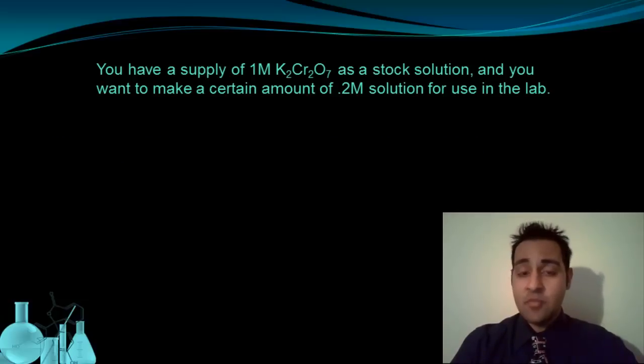Let's say you have a supply of 1M K2Cr2O7 as a stock solution, and you want to make a certain amount of 0.2M solution for use in the lab. You could prepare this 0.2M solution by diluting the 1M solution. Let's see how this is done.